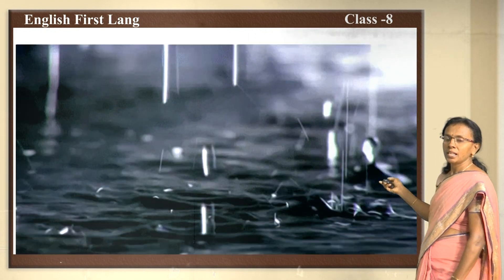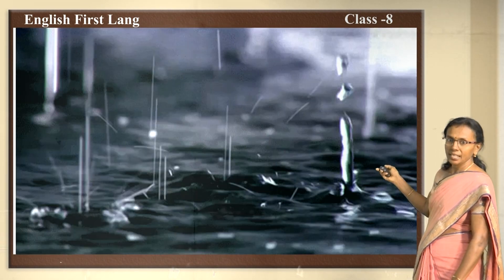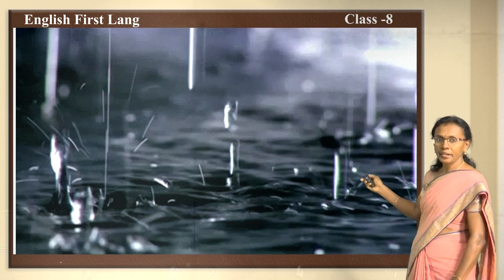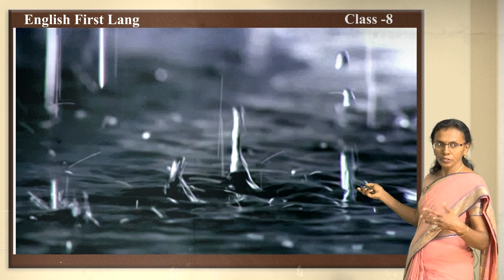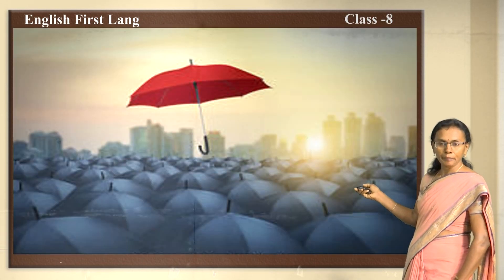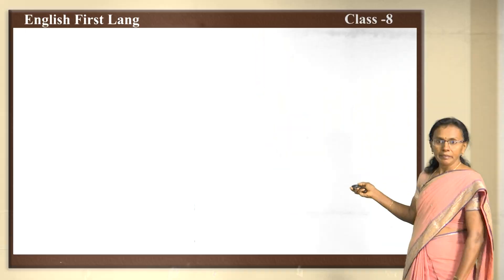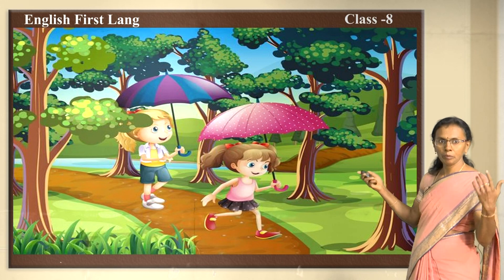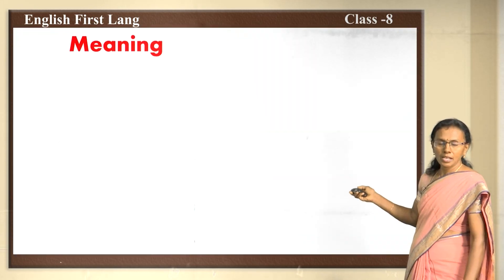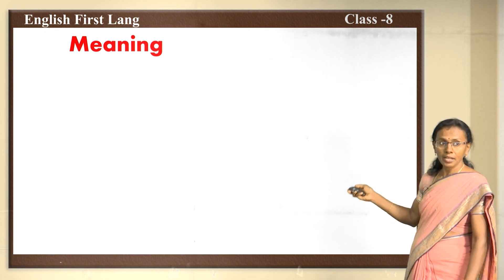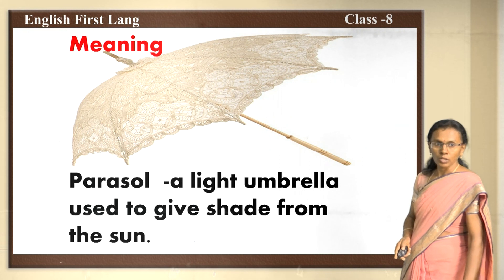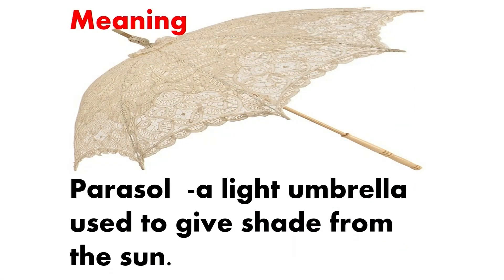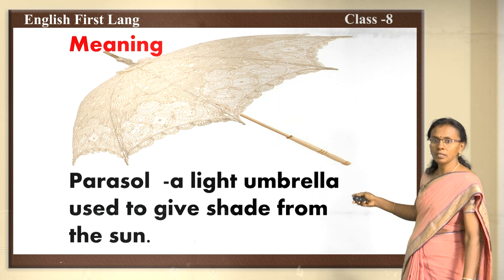You see, it all ended in the sound of rain. When it rains, what do you need? You look for an umbrella. Even children look for an umbrella because they need protection from the rain. Likewise, there is an umbrella called a Parasol. A parasol is a light umbrella used to give shade from the sun.